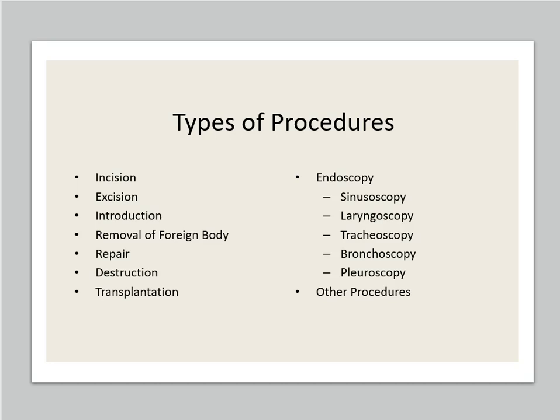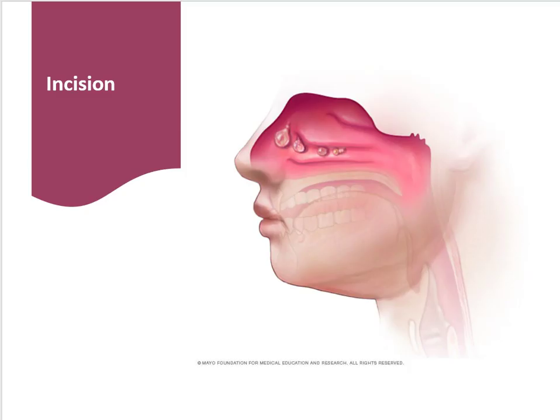First up, we're going to go to page 187, and under nose we have our incision procedures. Notice you have two codes under incision — they look alike. They start off with drainage abscess or hematoma nasal. The first one says nasal internal approach, the second one is nasal septum. Words matter, guys — pay attention to the different details.